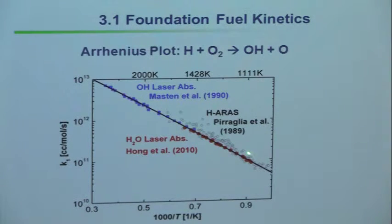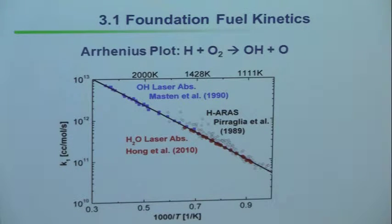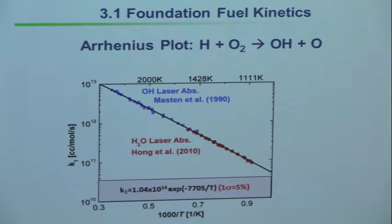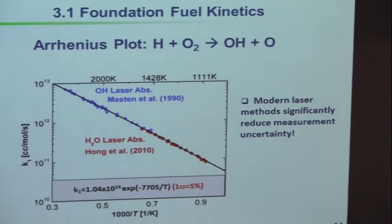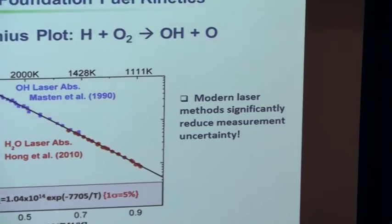The open symbols are the work of another group around 1990 using atomic resonance absorption spectroscopy (ARAS). The scatter in the laser data is much better than with that other method. Because of the constant power and monochromatic nature of the laser, we get much higher quality data. The two measurements agree, and we would say that rate coefficient is now known to perhaps 5-7%. Modern laser methods combined with shock tubes reduce the uncertainty in this quantity that's so important in combustion modeling.